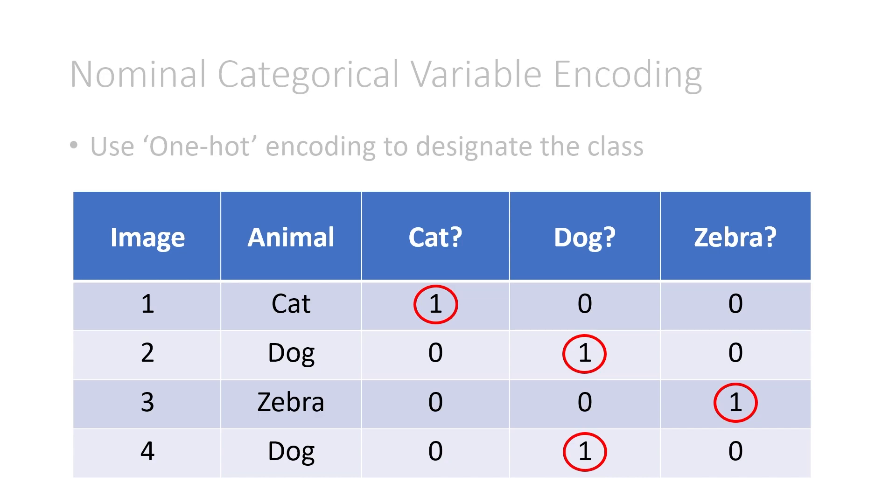Same thing with all of the cats, all of the zebras. Now this gets the job done, because zeros and ones are numerical. This is called one-hot encoding, because throughout any row, there's only one hot spot. This is the hot spot, that's hot, that's hot, and that's hot, and it's hot with a one.